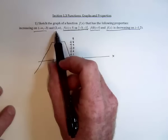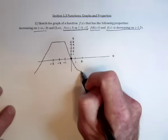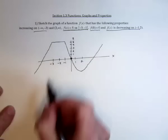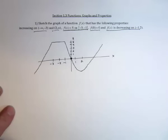And it's increasing from 2 to infinity. So from 2 over here to infinity, we need it going up and up and up. And that takes care of all of the properties.